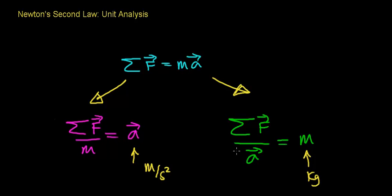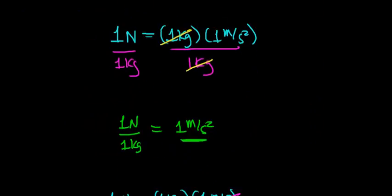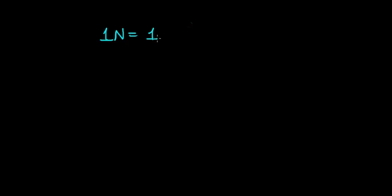In this video, what I'd like to do is talk about why, when you divide a Newton of force by a unit of a meter per second squared, you get a unit of mass, which is a kilogram. To do that, we need to go back to the definition of a Newton, which says that one Newton was the force required to cause an object with a mass of one kilogram to accelerate at a rate of one meter per second per second.